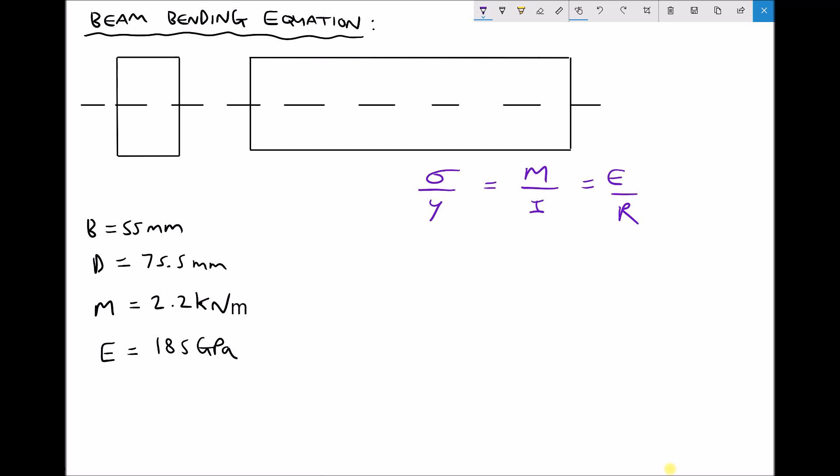So just to clarify what each of these terms are, sigma is our stress and stress is measured in pascals. Y is the distance from the neutral axis. That's going to be measured in metres. We need to make sure we work in SI units. M we've seen before in earlier tutorials. That's our bending moment, measured in newton metres. I is a new variable called second moment of area and our units for second moment of area are metres to the fourth.